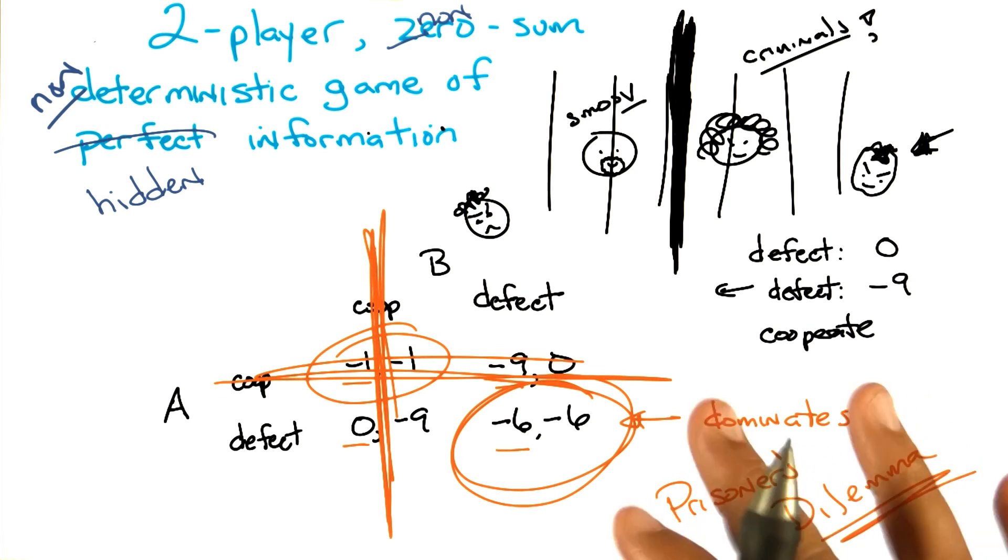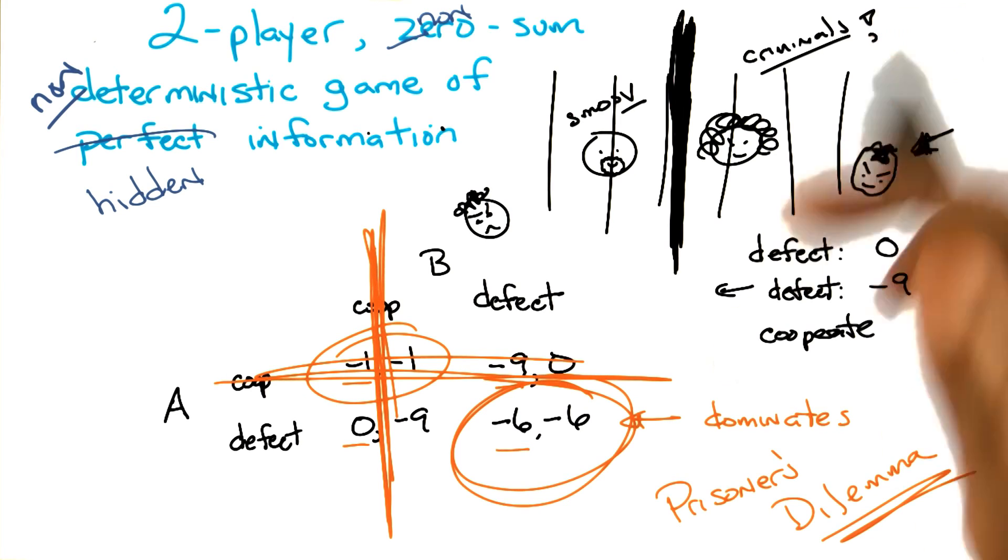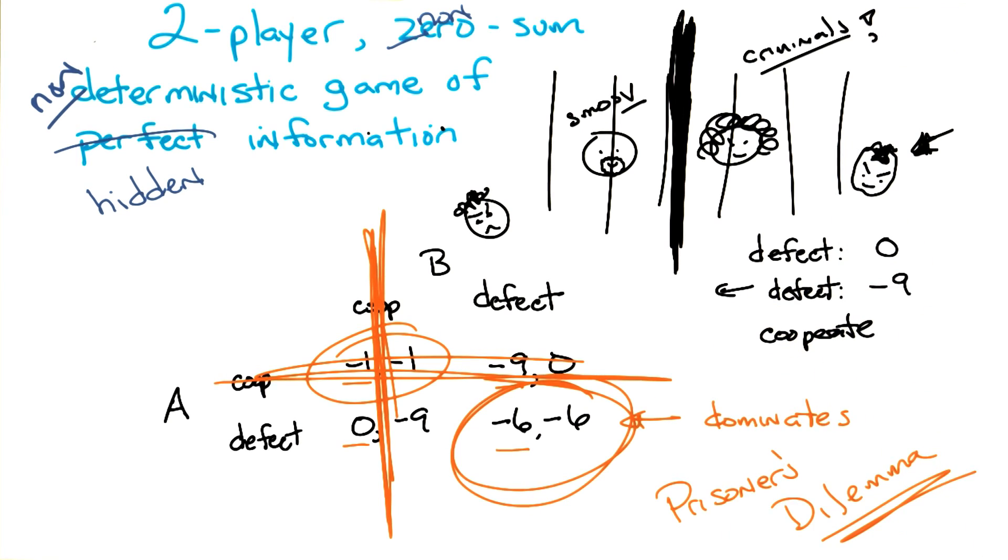So this brings us to a more general sort of strategy. This whole notion of strict dominance works in this case, but you can imagine very complicated, large matrices where it may not work. But it turns out there's a generalization of this notion of dominance that works remarkably well. And that's what people tend to use to try to solve these kinds of games, to find out what the true value of a game is. So let me describe that for you, okay?